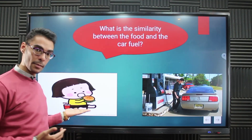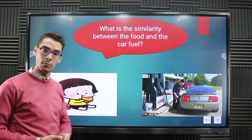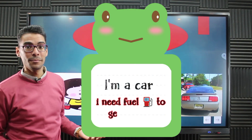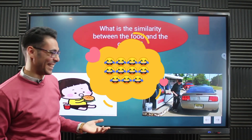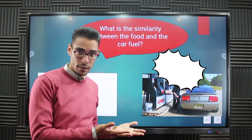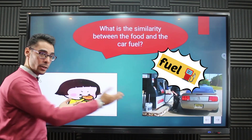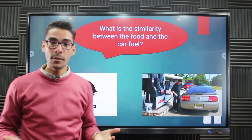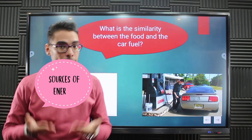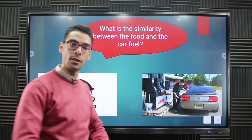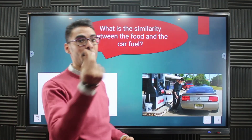So can you tell me what's the common thing between this boy and the car? The boy is eating a sandwich — why can't the car eat the sandwich? Because it doesn't have a mouth! I was joking. The car has its own source of energy which is fuel. So both need energy, but the source of energy is different, which means we have many sources of energy. In this series we are going to study forms of energy and then sources of energy later on. Let's get started.